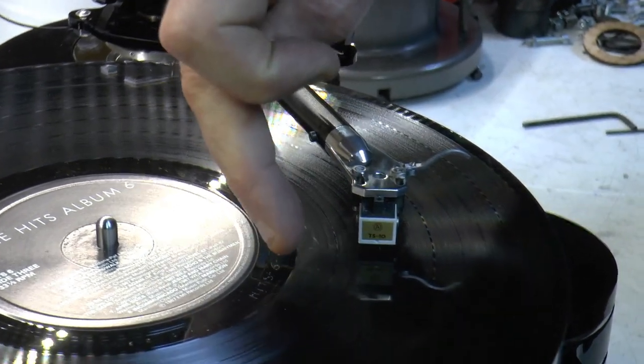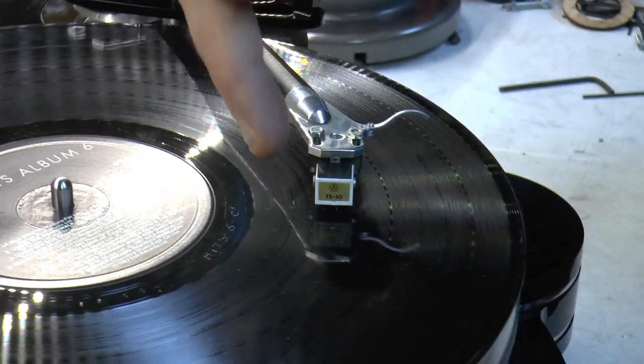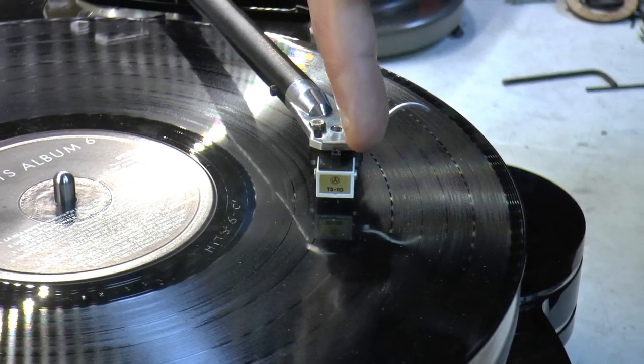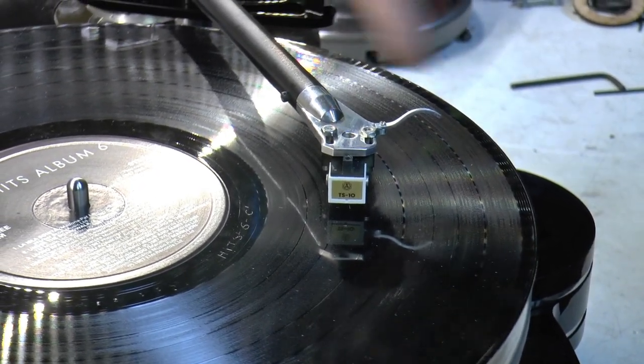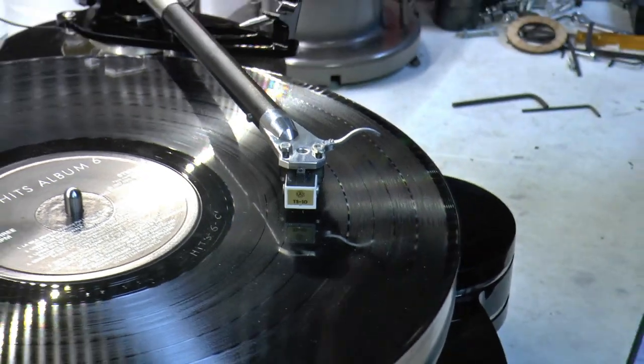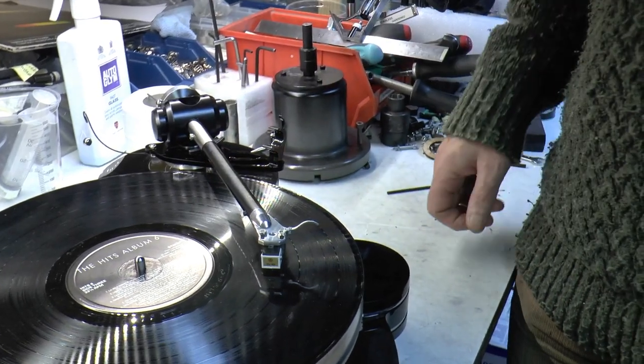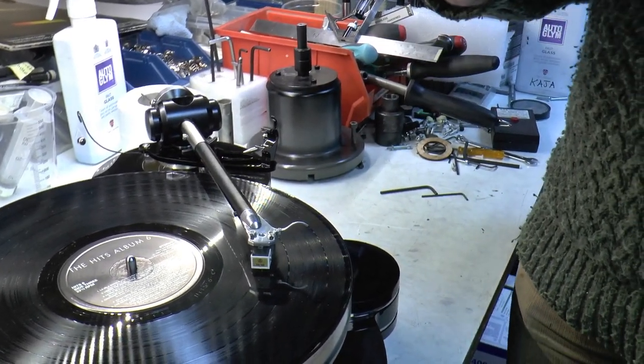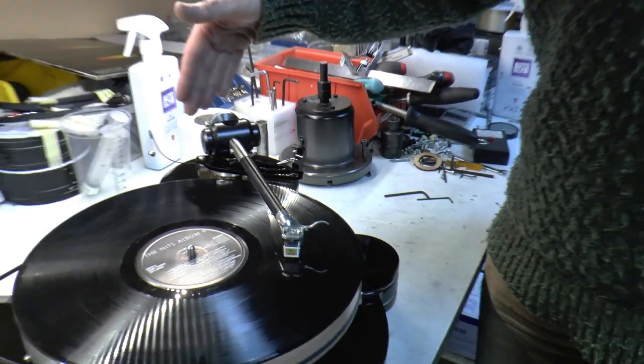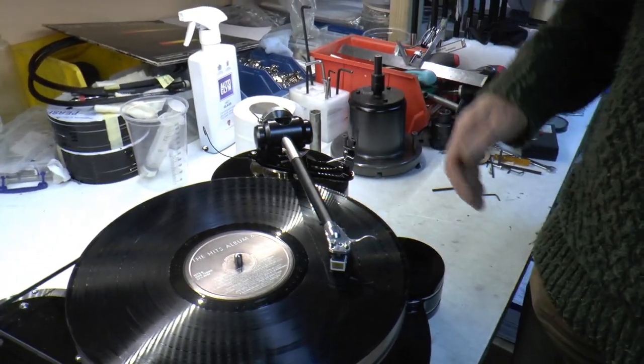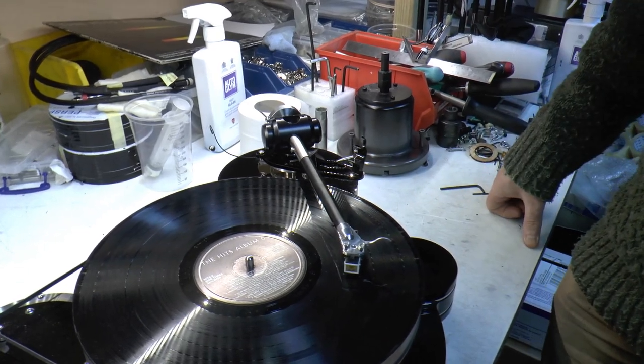As you get further out, the tracking issues become much easier to cope with than on the inner track. So I personally think it's best to bias the side bias towards performing best on the inner tracks. That's my logic, but everyone has their own preference.